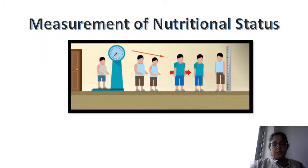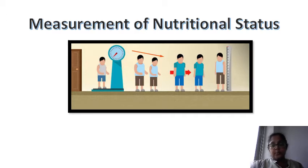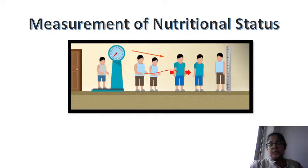Hello everyone. Today we will learn about the measurements of the nutrition status. As you can see in this picture, some people are measuring the height, some people are measuring the weight and we are actually showing their graduations. So this person was fat, now he has become lean. This is the nutritional status — the status of nutrition in your body — and we will measure this by certain techniques.